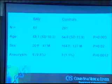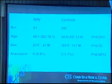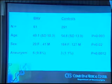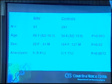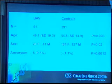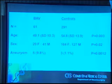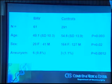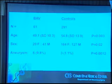When you compare those two groups, age is a little bit higher in controls, and women are a little bit more common in controls. That's important to remember, because we know that the older you get, the more likely you are to have an aneurysm, and it's also more common for women to have an aneurysm compared to men. But in spite of those two factors being more common in controls, there was an obvious increased risk in the bicuspid aortic valve group. Out of the 61 people with a bicuspid aortic valve, six of them — about 10% — had an aneurysm. And of the 291 controls, only three were found to have an aneurysm. So it's about 10 times more common in people with a bicuspid aortic valve.